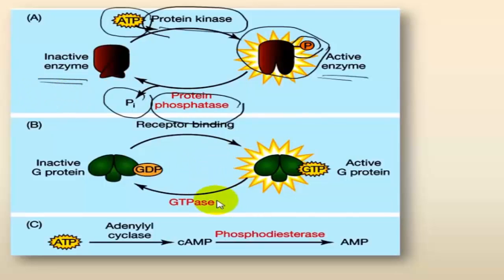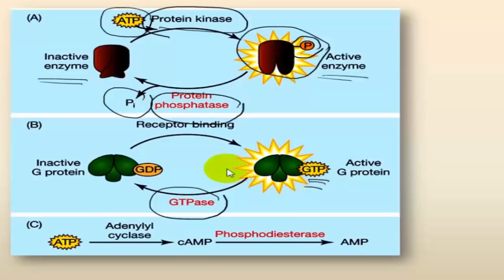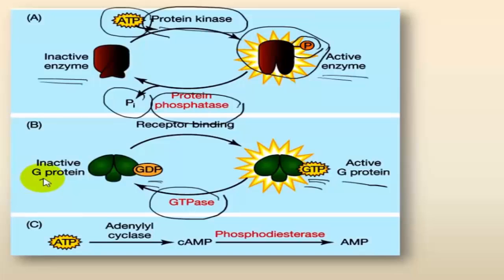Another way is by the use of GTPases. Cells produce GTPases that hydrolyze GTP into GDP — specifically, they hydrolyze GTP bound to active G protein, thereby rendering it inactive.